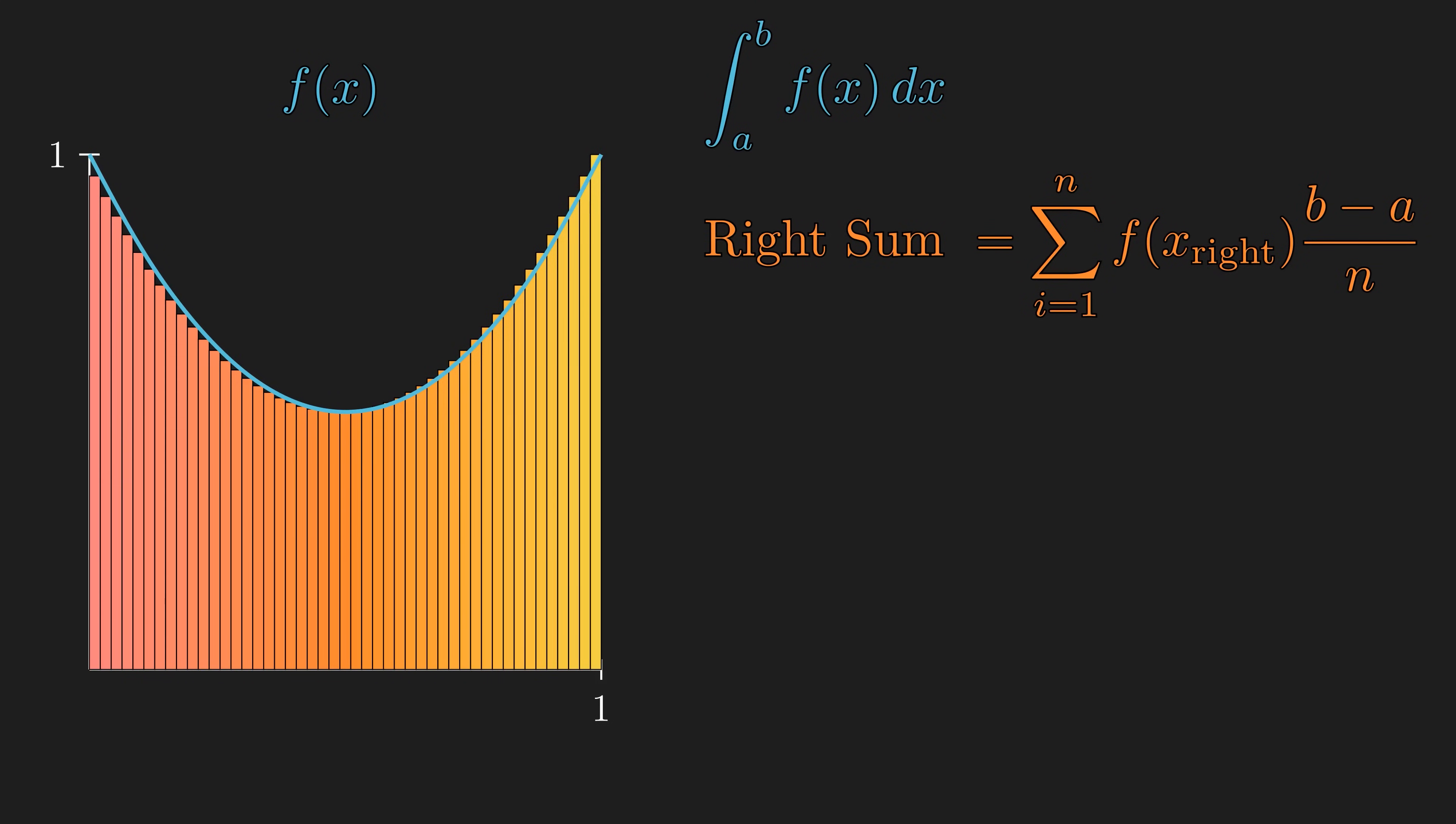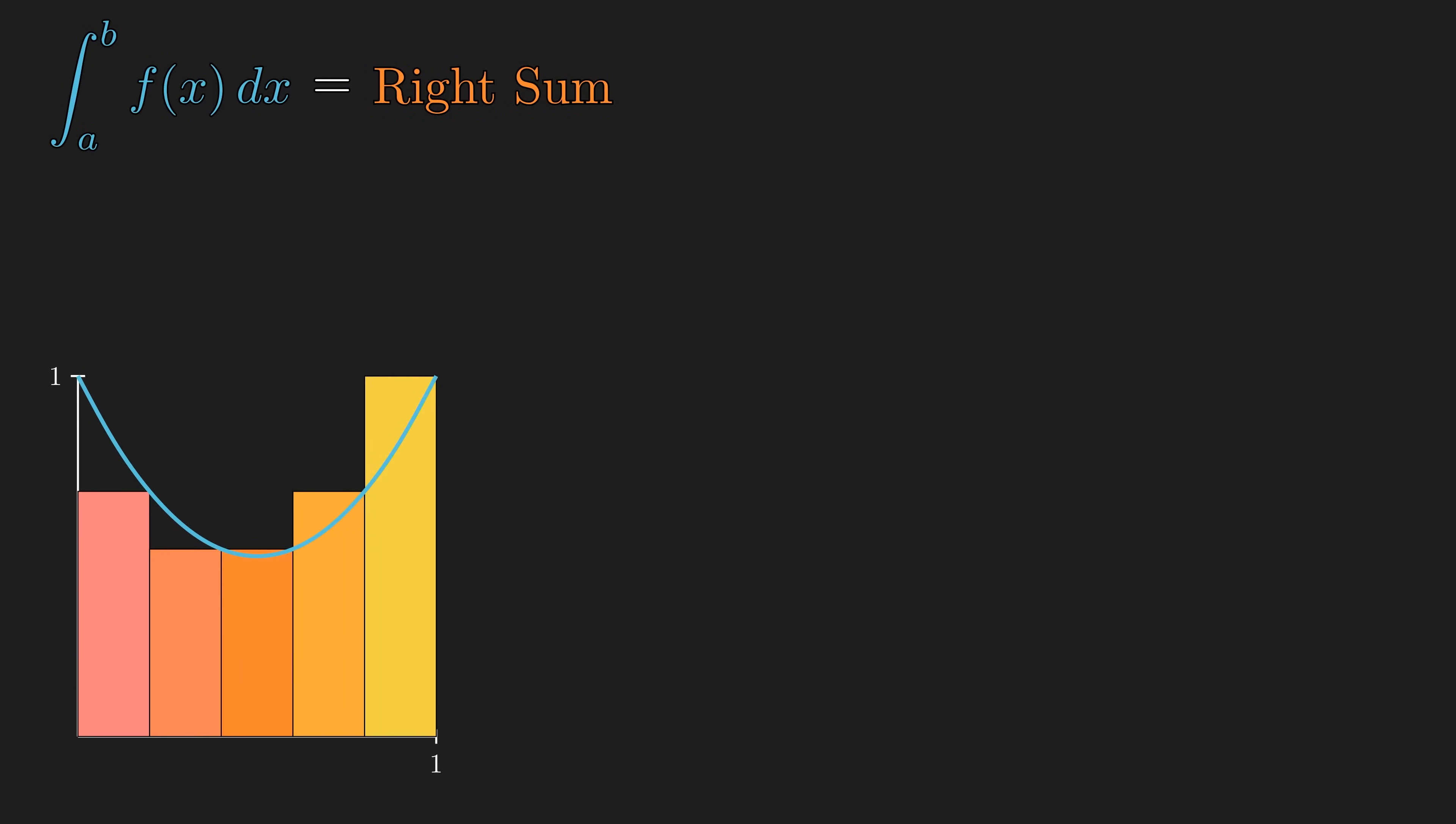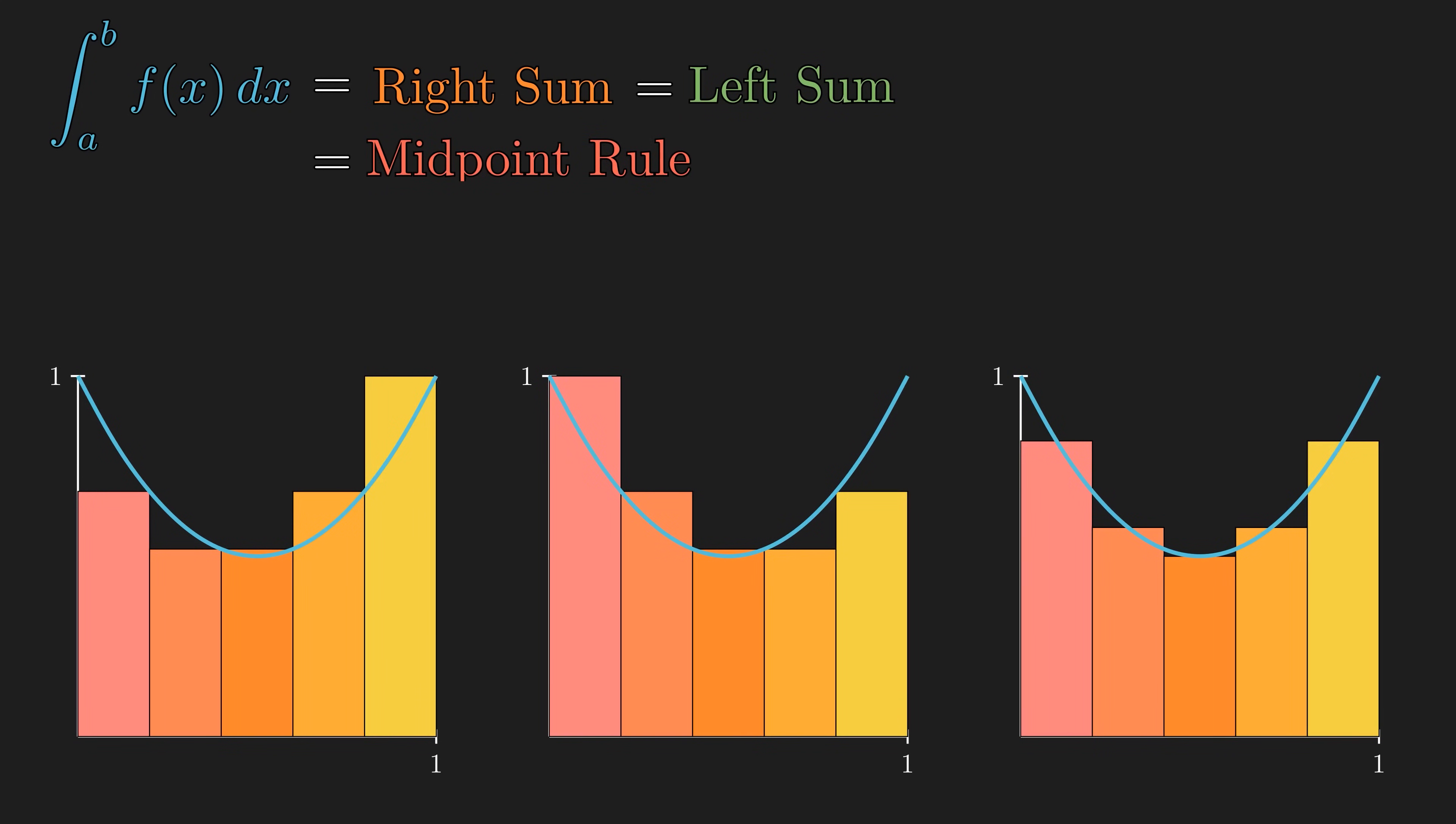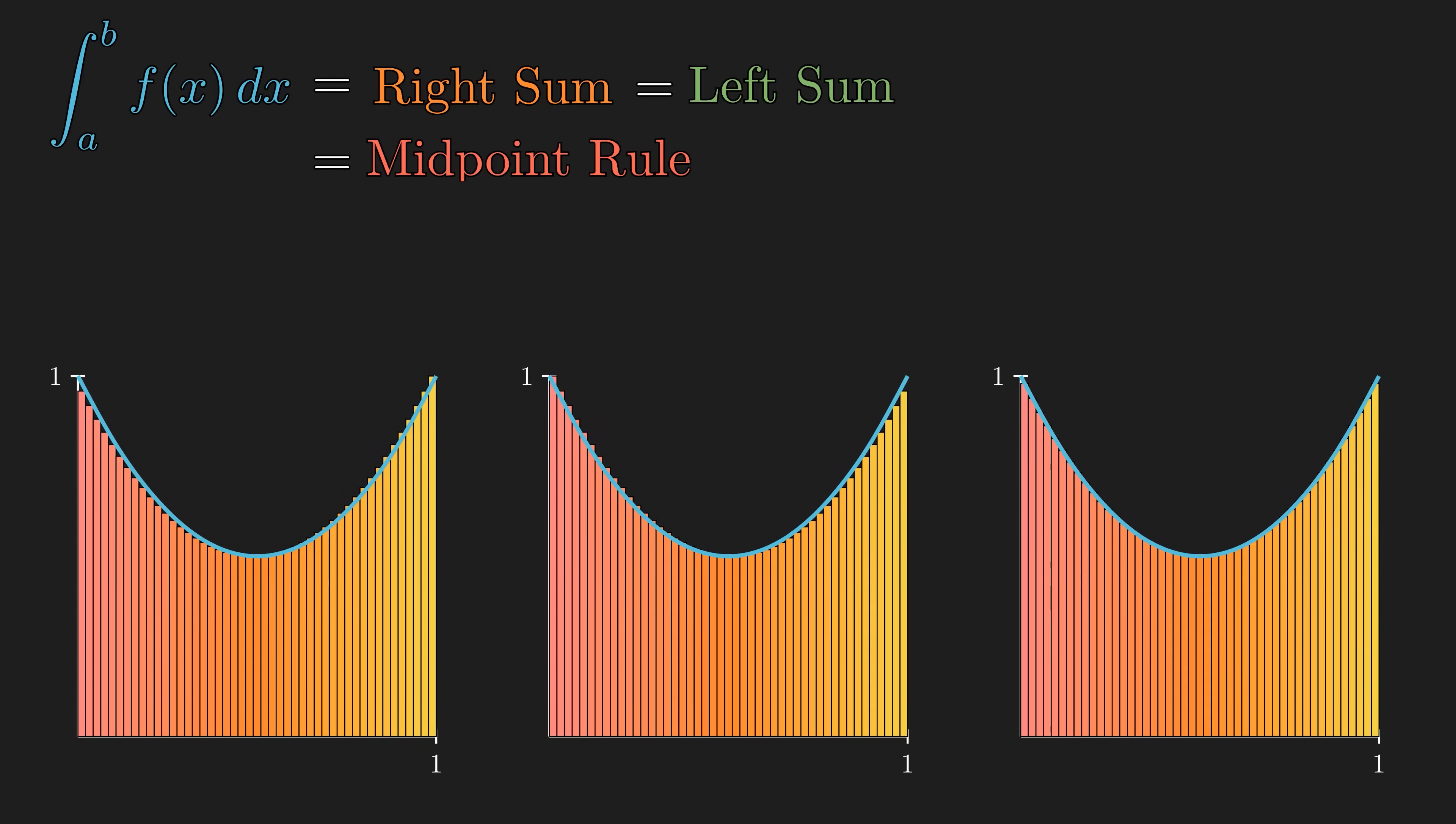As we make each rectangle infinitesimally thin, we get the exact area under the curve. We use right rectangles here, but we could instead use left rectangles or the midpoint rule to find the area. Once we take the limit, the area should approach the exact same value.